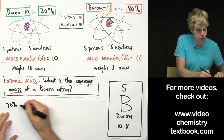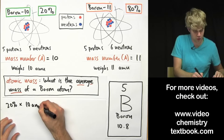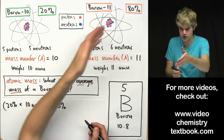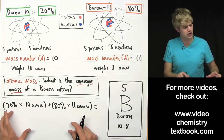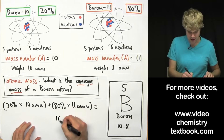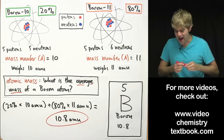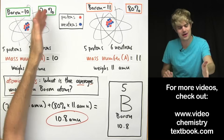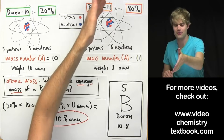Here's how we do it. We take the fact that there are twenty percent boron-10 atoms weighing ten AMU each — so twenty percent times ten AMU — and add that to eighty percent times eleven AMU. We convert the percentages into decimals and when we work through the math, we end up with 10.8 AMU. This tells us the average weight of a boron atom, taking into account that only twenty percent are boron-10 and eighty percent are boron-11.